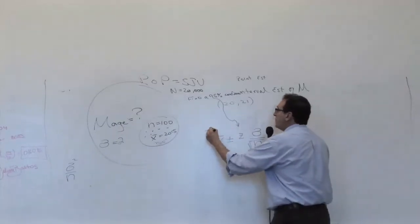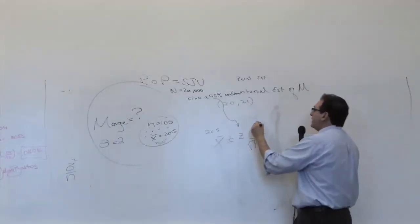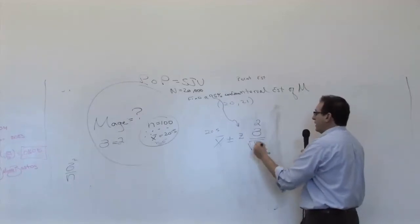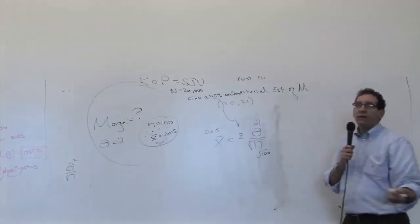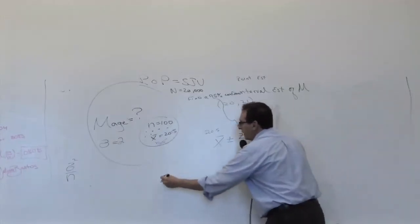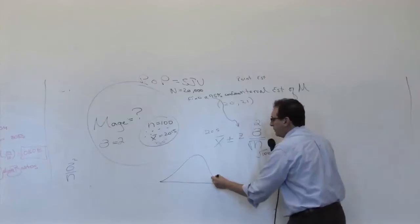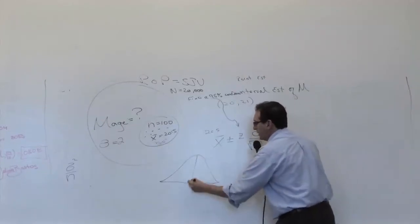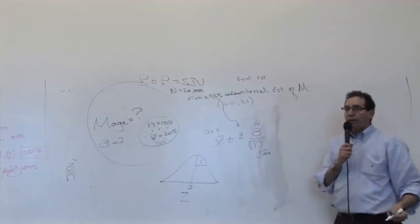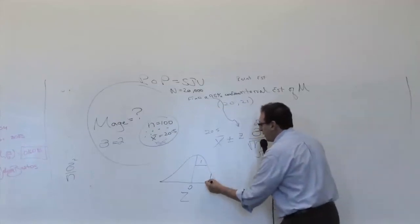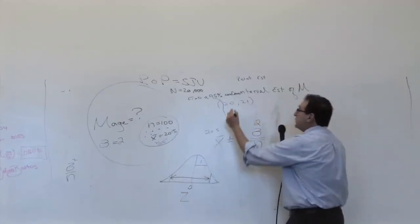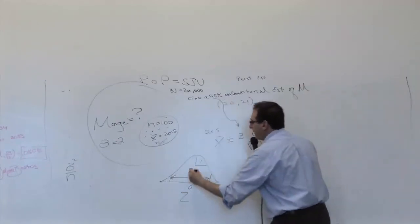The x-bar in this example is 20.5. The sigma is 2. The n is 100. The only thing that we haven't done yet to finish up, which is half the test, is the z. I'd recommend the following picture, and again, like all my pictures, most people don't do them, but it really makes life easier. You start out with a basic z-diagram. You make two vertical lines indicating that between those two pieces, you're going to chop off the desired degree of confidence, in this case 95%.